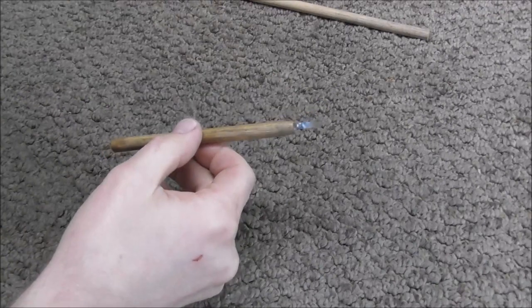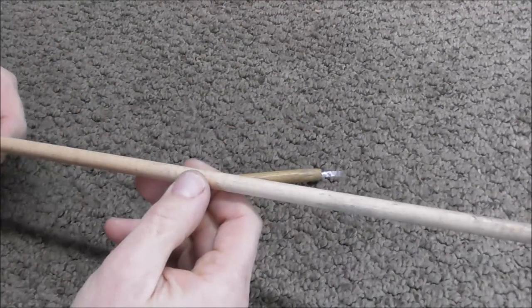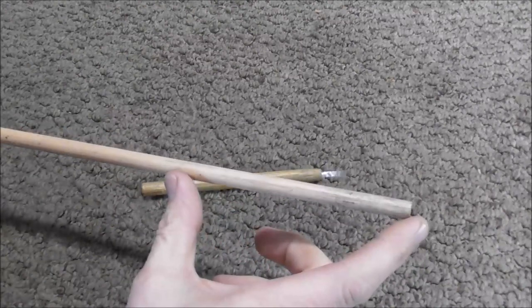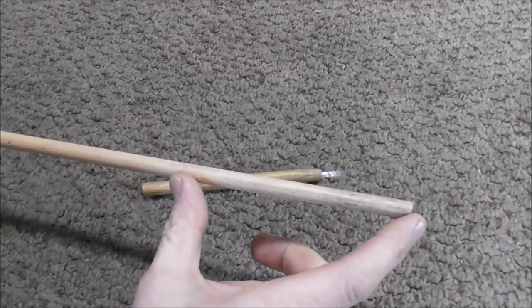This tool is very simple to make. You take a three-eighths or one centimeter dowel and you cut off a section about five inches or about twelve centimeters.